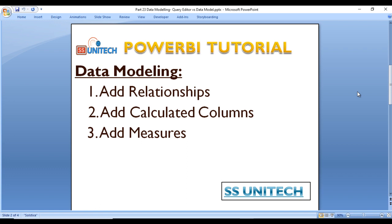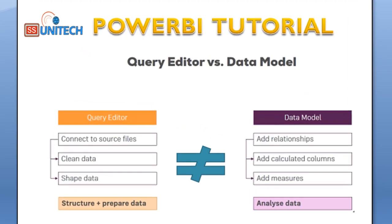Next, what is the difference between the data model and the query editor? In the query editor, we are connecting with the source files, cleaning the data, then shaping that data into a useful format — basically structuring and preparing the data. In the data model, we create relationships, calculated columns, and measures for analyzing the data. So the query editor is for preparing the data, and the data model is for analyzing the data.